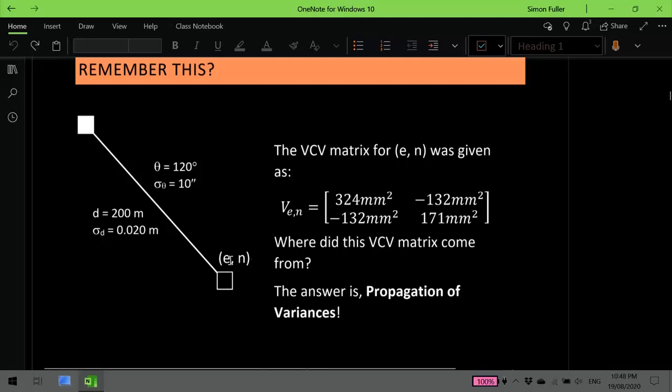But how do you calculate the precisions of those eastings and northings? What is the standard deviation of the easting? What is the standard deviation of the northing? And we would represent those values in a variance-covariance matrix, as is shown just over here.